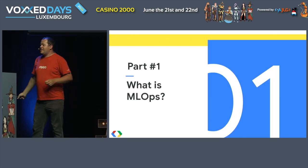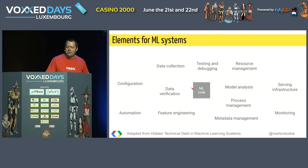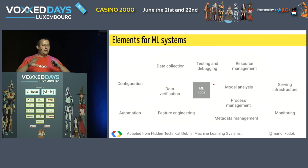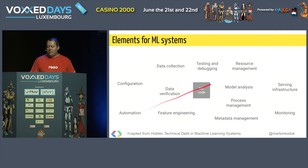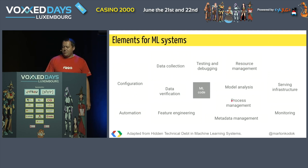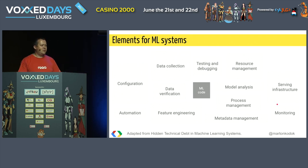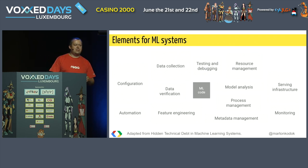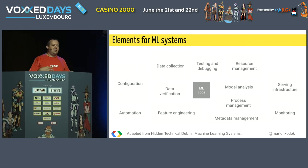Let's see the first part: what is machine learning ops? When we have machine learning code, there are a lot of sub-elements. We could have data collection, data verification, feature engineering, automation, resource management, process management, serving infrastructure, and monitoring — just a few pallets of your stack that could be identified as separate components of your technical debt.